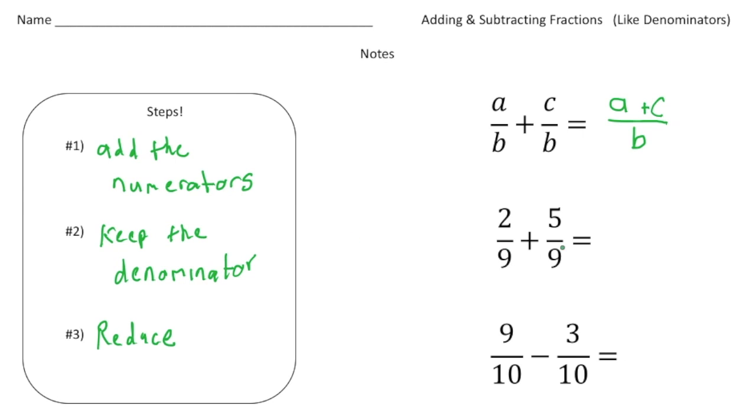Let's use this three step system to solve these two fraction problems. Here we have two ninths and five ninths. We have common denominators of nine, so we can add the numerators. Two plus five is seven, so it's going to be seven ninths. Seven ninths is reduced, so that's our answer.